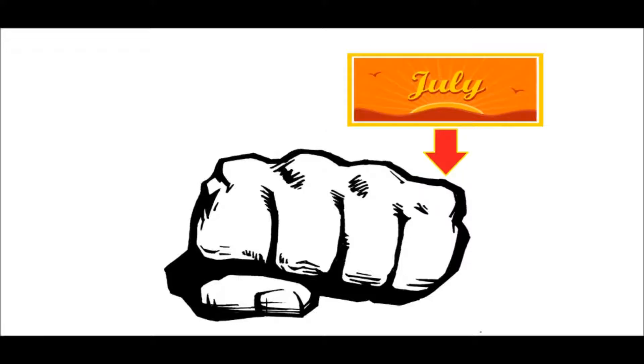Now we move over to our last knuckle, which is 31 days, and that's July. So now we've reached the end of the knuckles, and we're going to count this one twice — letting it represent August, which happens to also be 31 days.